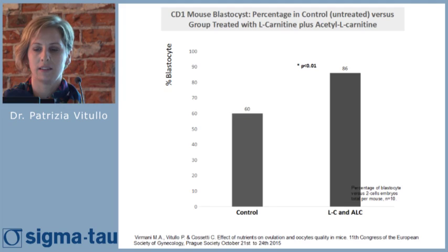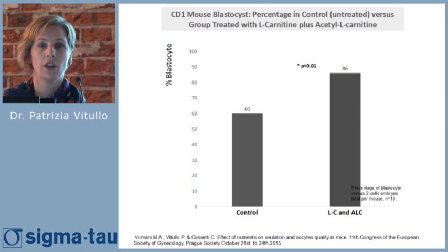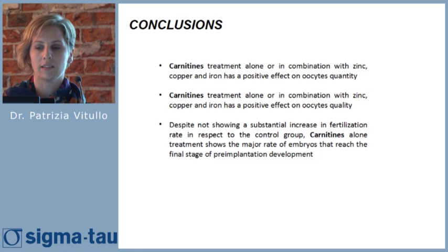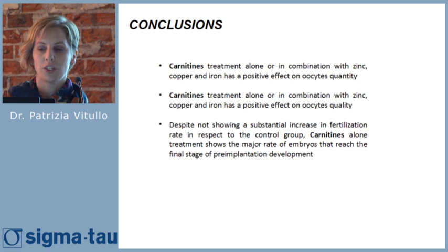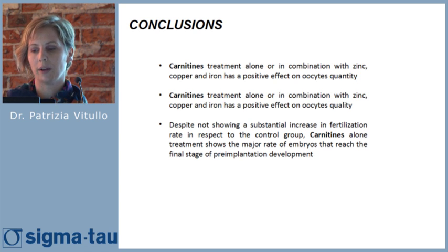The final result, which is in my opinion the most important, shows the percentage of blastocysts versus two-cell embryos. The group treated with carnitine showed the highest percentage of embryos and their capability to reach the last stage of pre-implantation development. In conclusion, carnitine treatment alone or in combination with zinc, copper, and iron has a positive effect on oocyte quantity and quality. Despite not showing a substantial increase in fertilization rate relative to the control group, carnitine treatment showed the highest rate of embryos reaching the final stage of pre-implantation development.